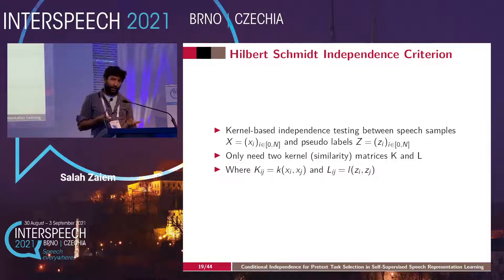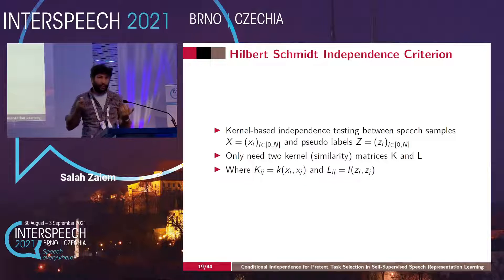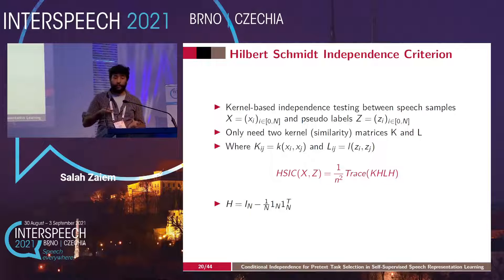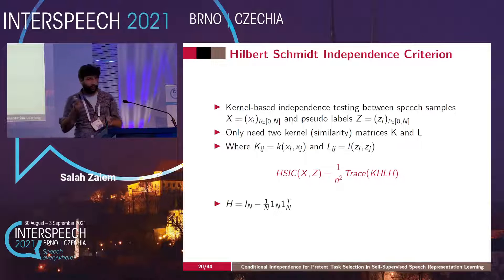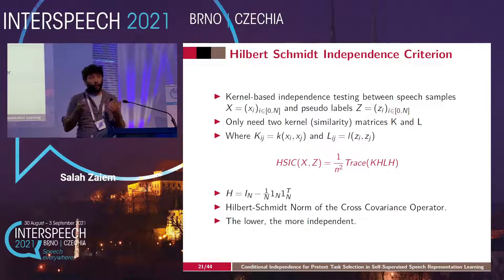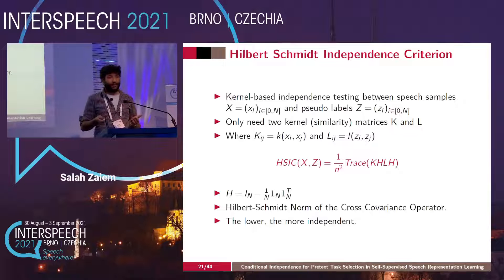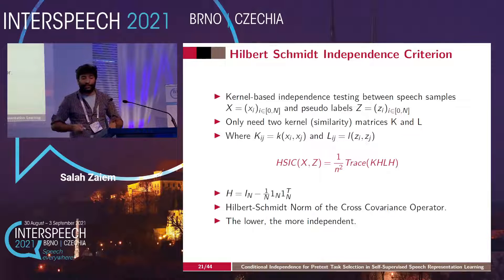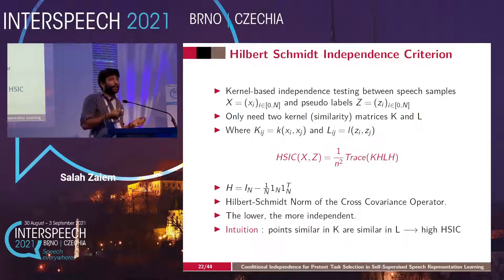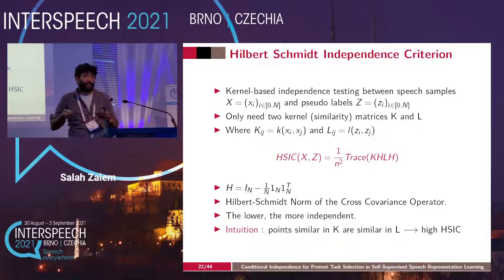Given K and L, we compute the independence test between X and Z, called HSIC, using a centering matrix H. This value is positive since it's the Hilbert-Schmidt norm of the cross-covariance operator between X and Z. The lower the HSIC value, the more independent X and Z are. The intuition is: if points that are similar in K stay similar in L, then HSIC is high and X and Z are not independent.